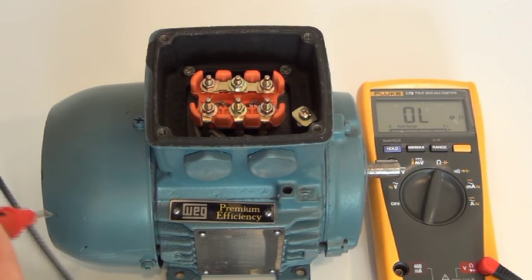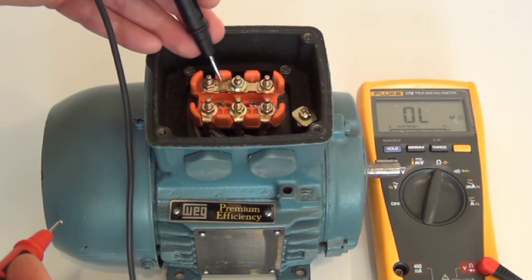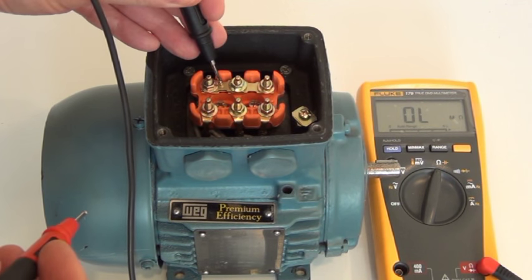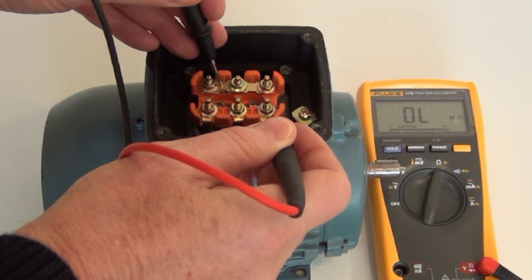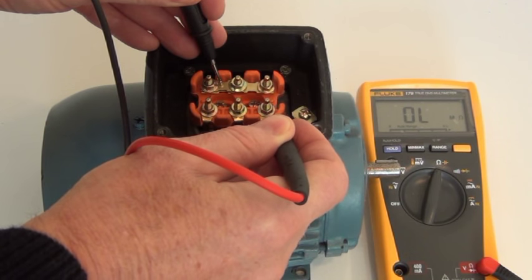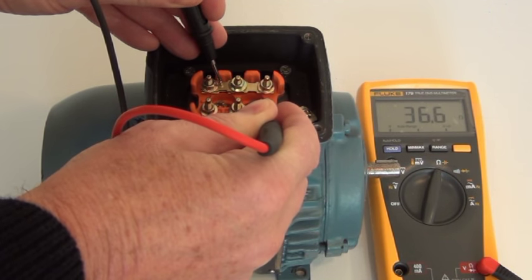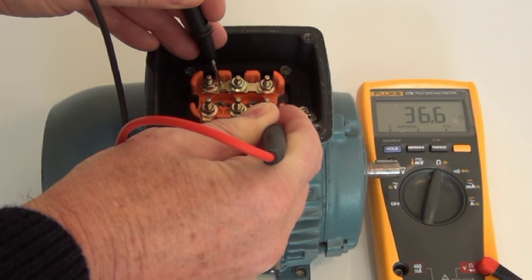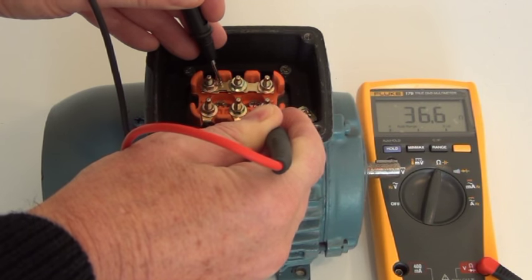I'm going to put my black lead onto the star point and then starting at U, which is this terminal, I've got 36.6 ohms. So I'll make a note of that.